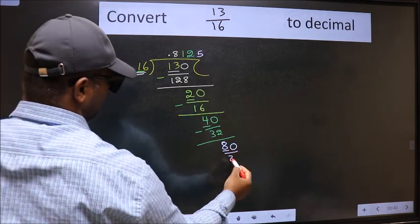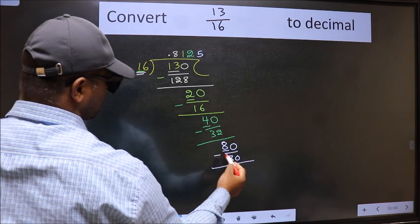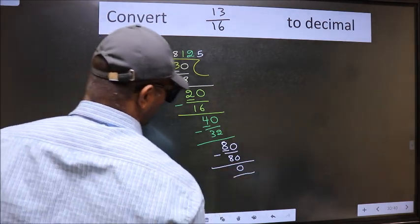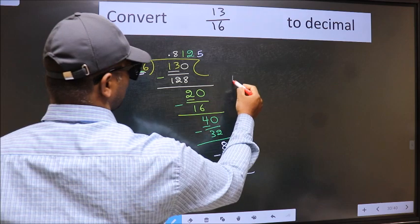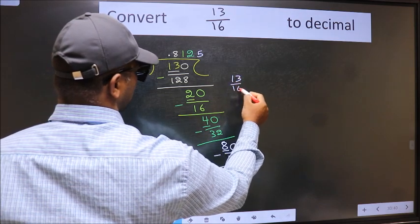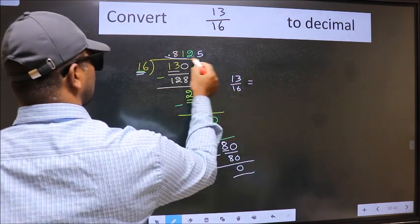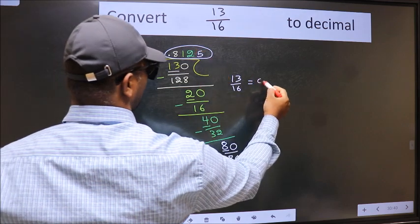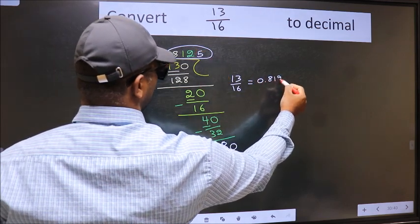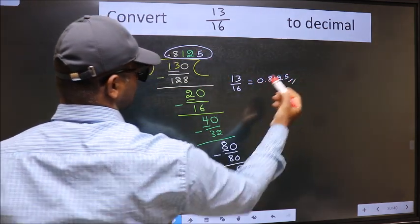Now we should subtract, we get 0. Therefore decimal of 13 by 16 is this one: 0.8125 is our answer.